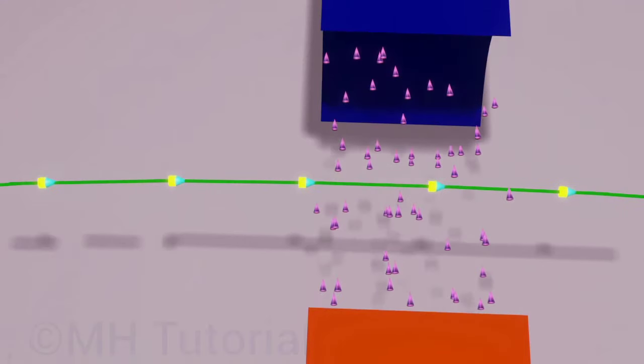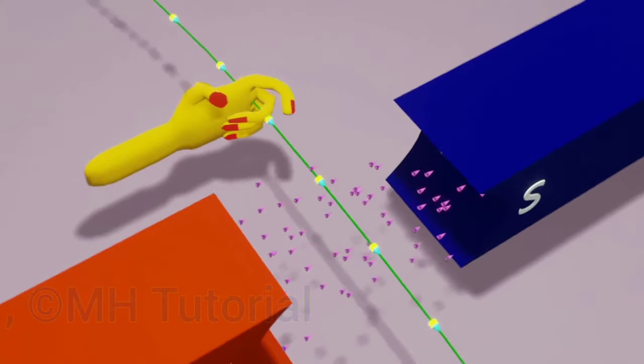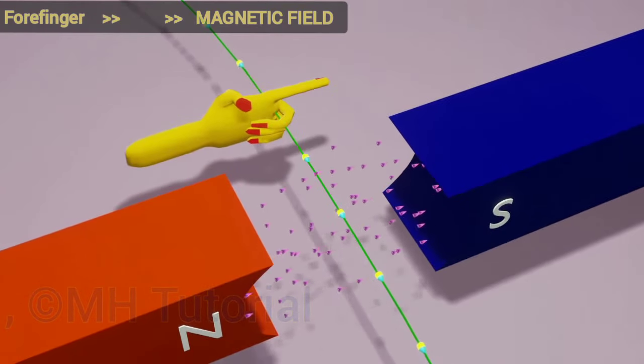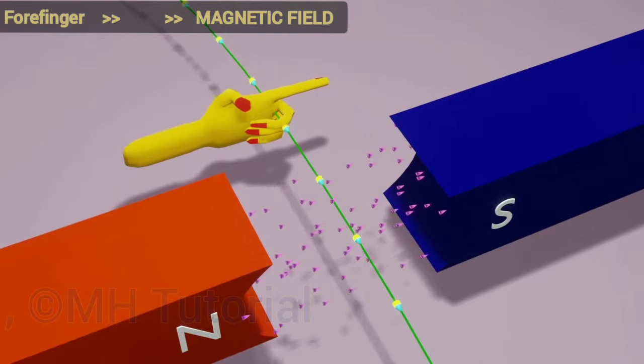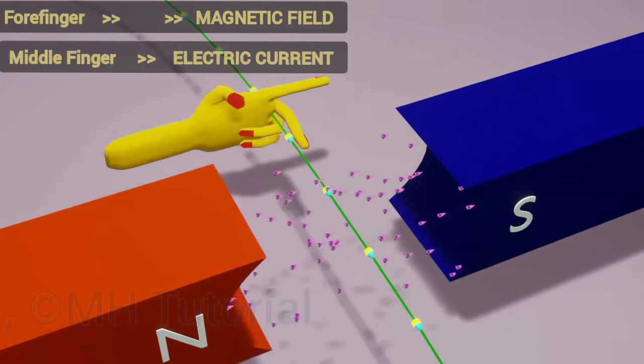The rule says, if we spread our left forefinger, middle finger and the thumb perpendicular to each other, and if the forefinger indicates the direction of the magnetic field and the middle finger is aligned to the flowing current,